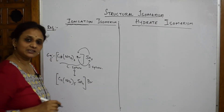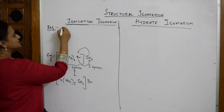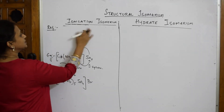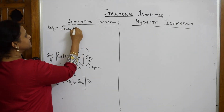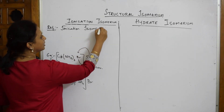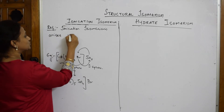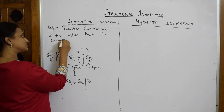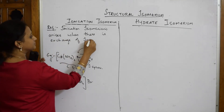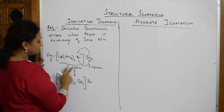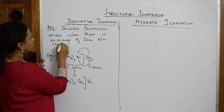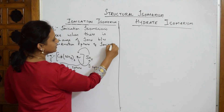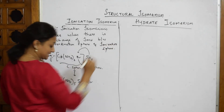Now let's write the definition of ionization isomerism. Ionization isomerism arises when there is an exchange of ions between the coordination sphere and the ionization sphere. That's it — simple.